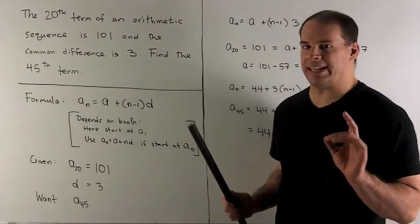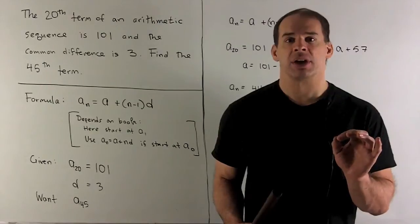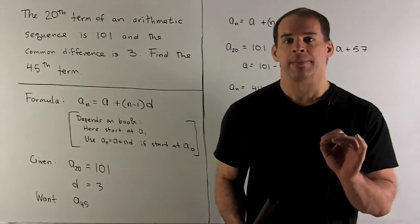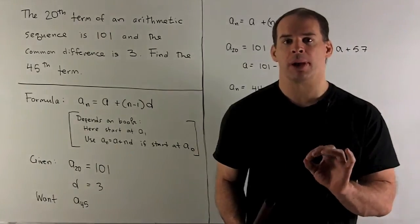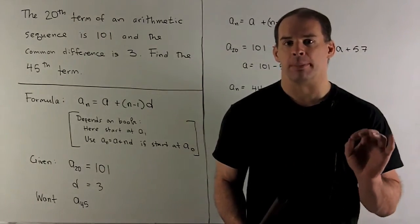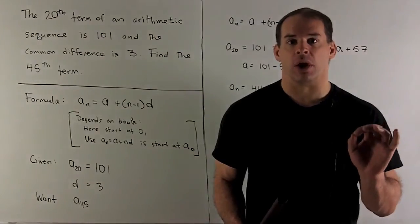plus (n-1)d. So in this case, our first term is going to be a_1, that's equal to a. We get all successive terms by adding d. Now some books you may start with a_0, in